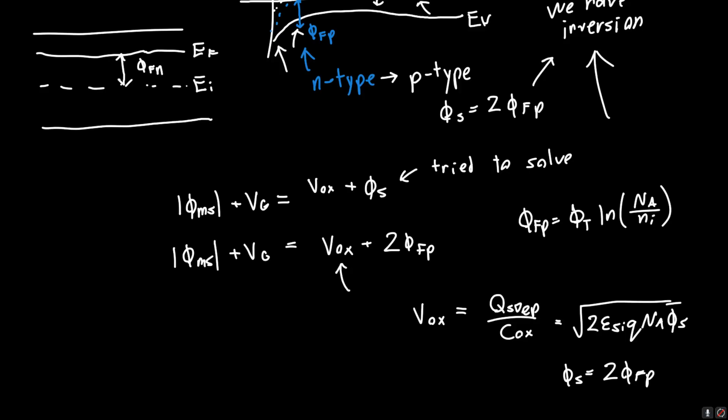And since we want this equation in terms of VG, because we want to know the gate voltage applied, if we rewrite this whole equation, VG is going to be 2 times PHI_FP, plus the square root of 2 times epsilon_silicon times Q times NA times 2 times PHI_FP, minus the magnitude of PHI_MS. And we're done. This is the threshold voltage, VT. This is how you calculate it.